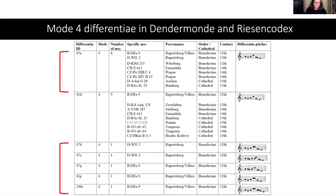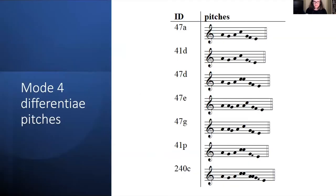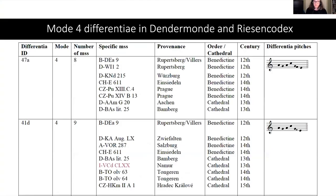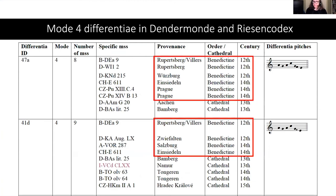Differentiae 47a appears in eight manuscripts and 41d in nine. If we look at all seven mode 4 differentiae, we can see they are all variations of each other, with differences mostly in pitch repetitions and the use of liquescence. For the two popular differentiae, 47a and 41d, we again see Benedictine usage in southern German locations, while the cathedral usage shows southern Germanic locations as well as the Low Countries.